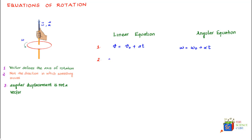The second linear equation is: displacement, that is final position minus initial position, equals initial velocity multiplied by time of motion plus one-half times acceleration times t squared. The equivalent angular equation is: theta minus theta-naught, which is the final angular position minus the initial angular position, equals initial angular velocity times t plus one-half times angular acceleration times t squared.